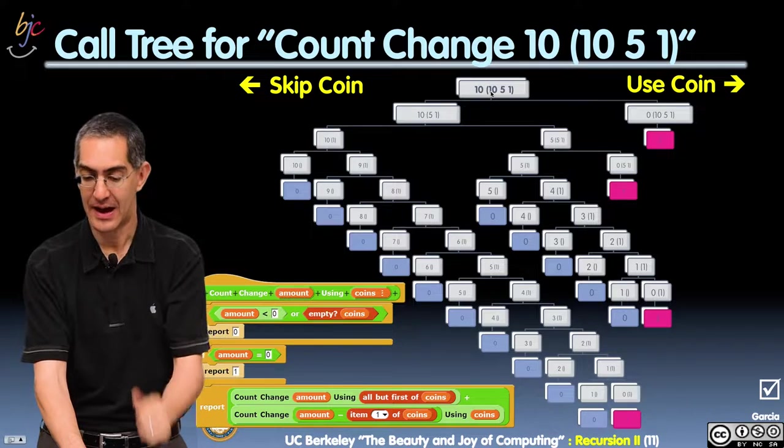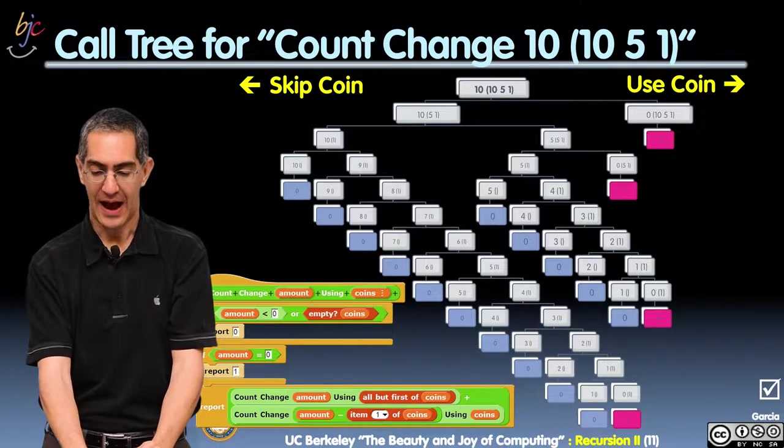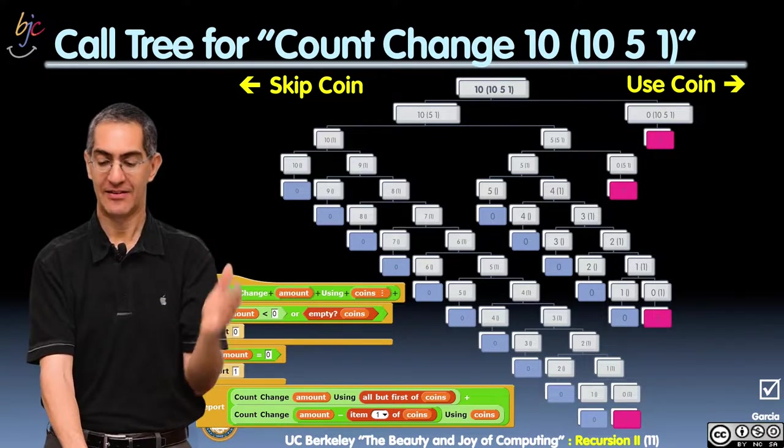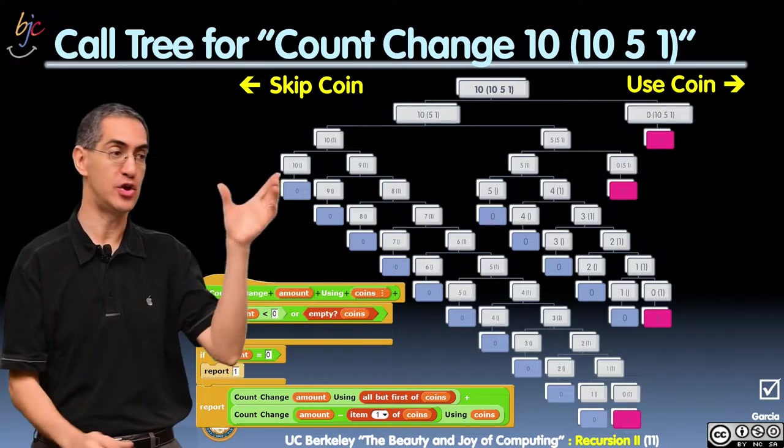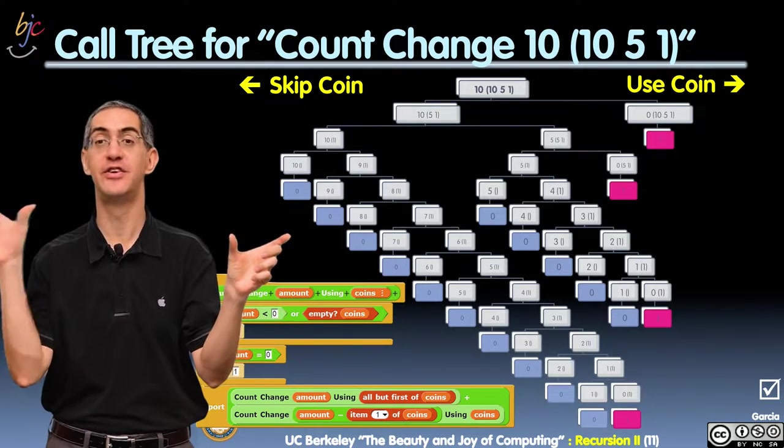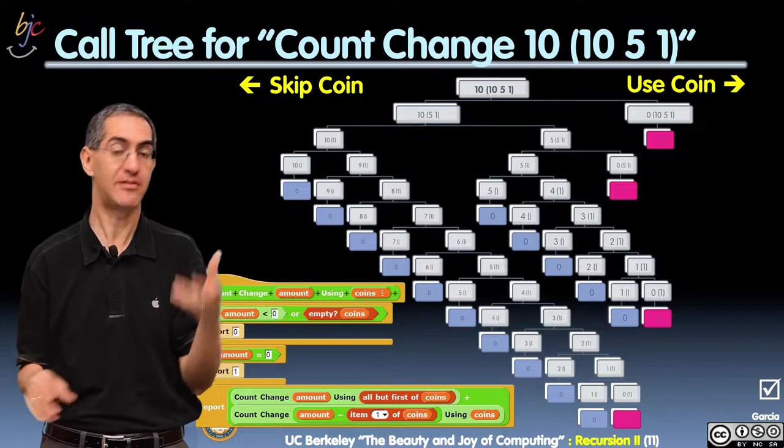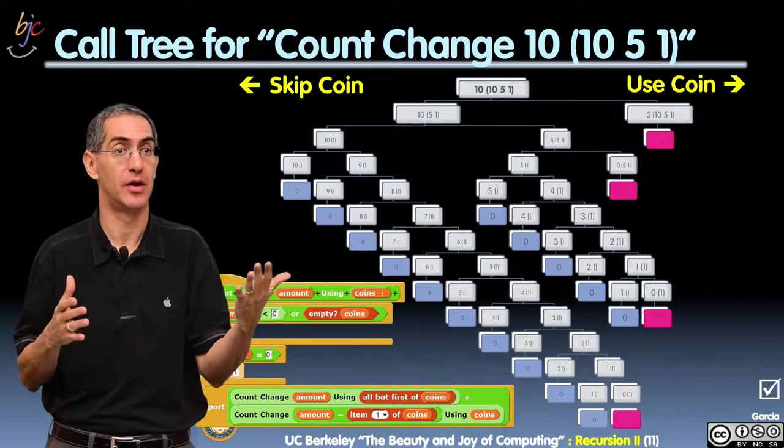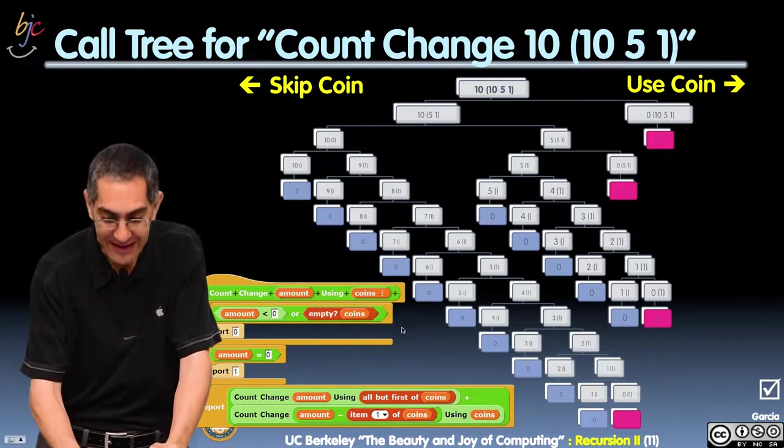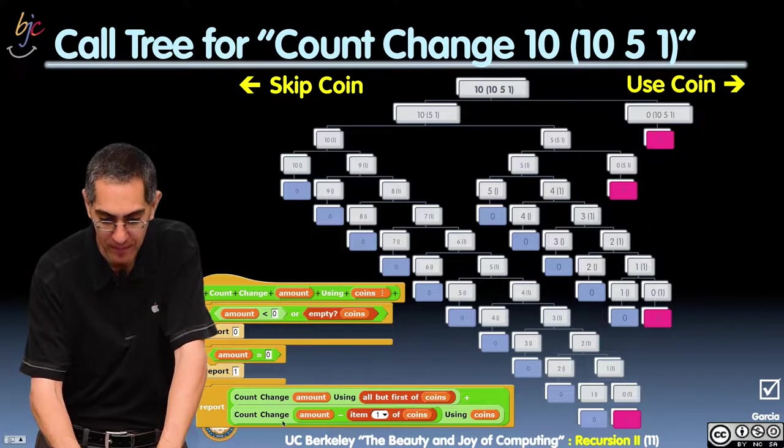You ask me for a dime with 10, 5, and 1. I either, let's go left, use the coin, which is on your right, use the coin, or skip it. So let's do the easy case. I use the coin. So what's the case here? What's the use the coin one? Down here.